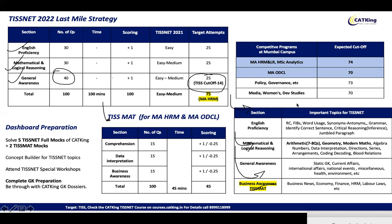Now that you've understood this, here are your expected cutoffs. For the MA-HRM and LR program and the Analytics program, the cutoff is around 74. For ODCL it's 70. Policy and Governance is around 73. Programs for Media and Women's and Development Studies are the lowest, but still around 70. So target 75 to 80 correct to stay safe across programs.